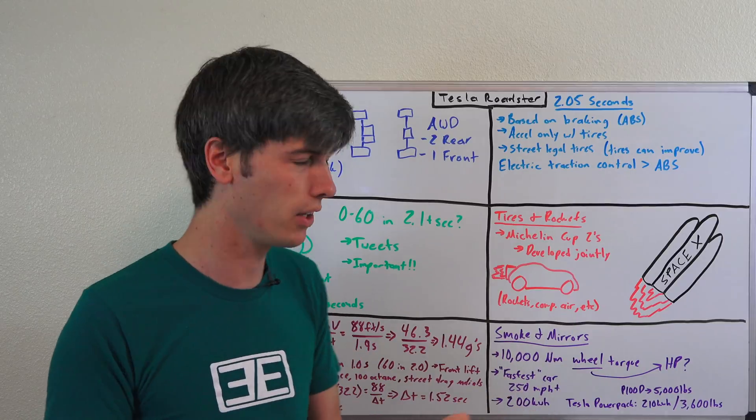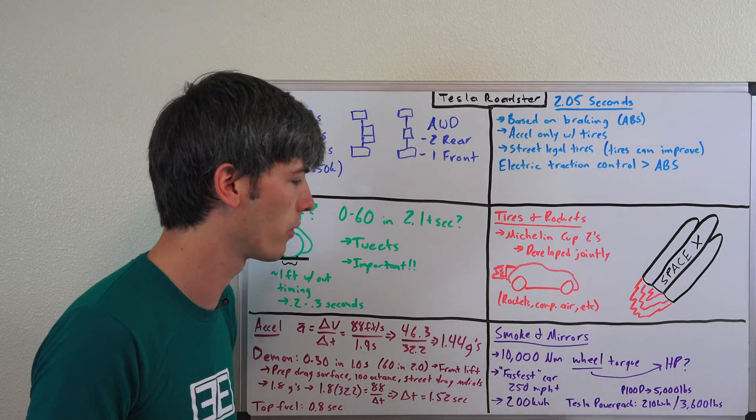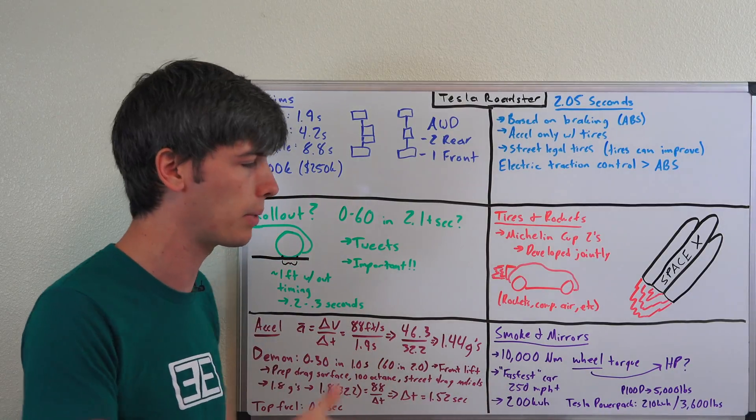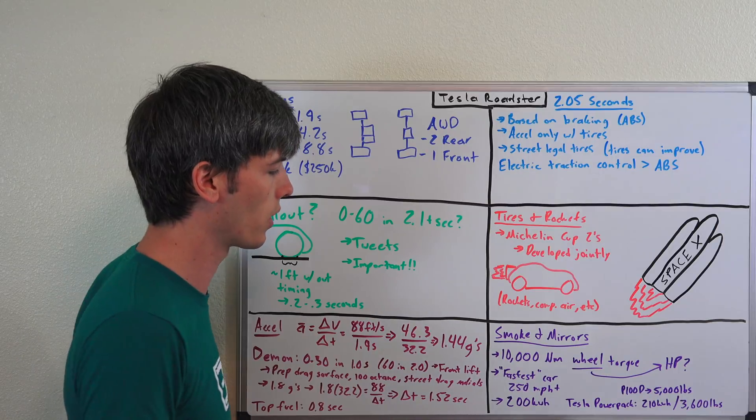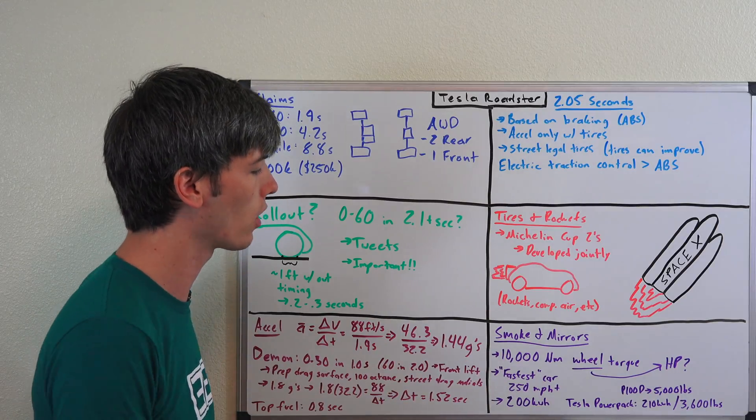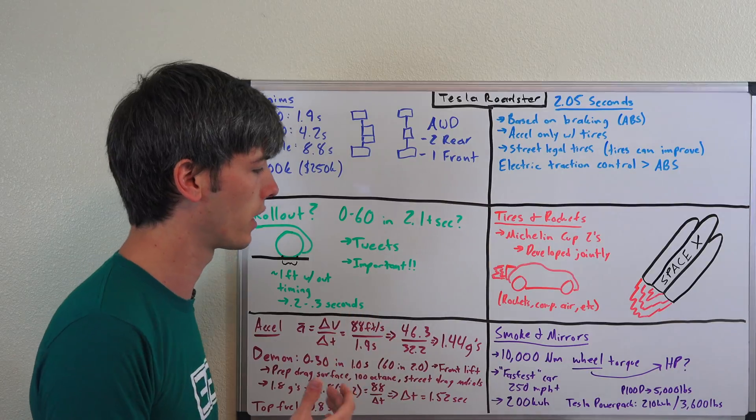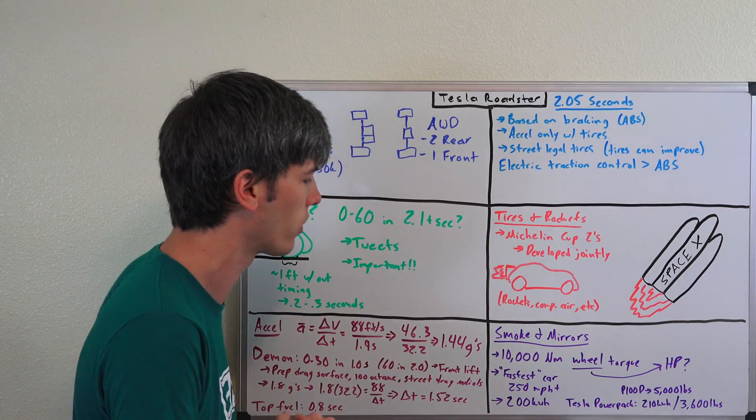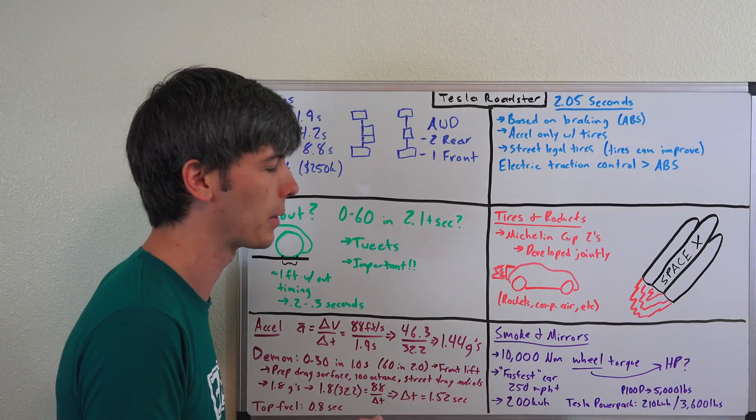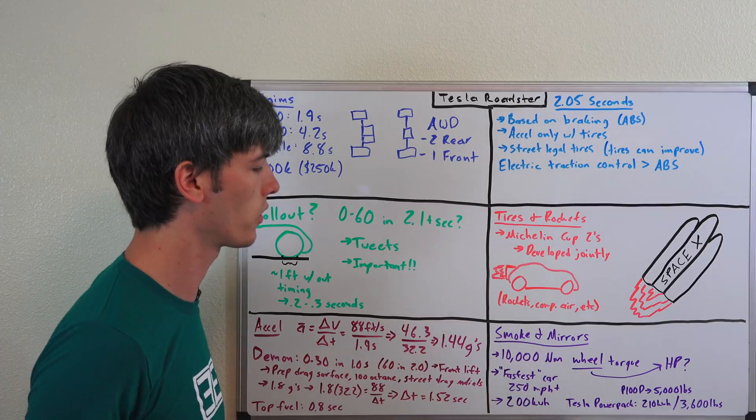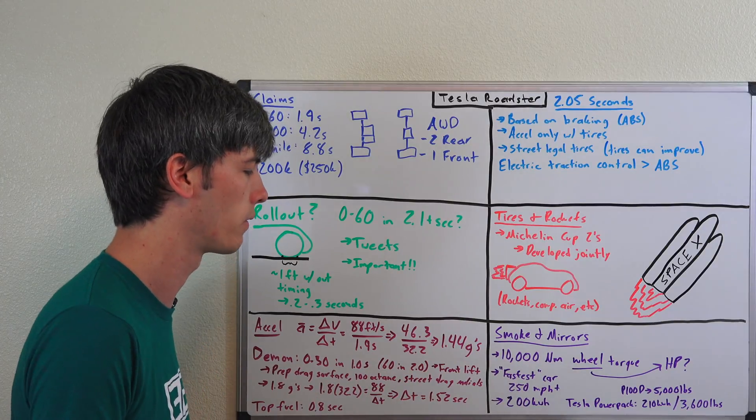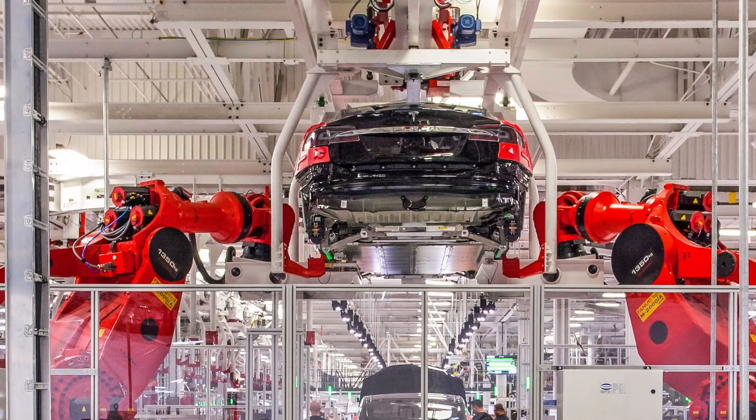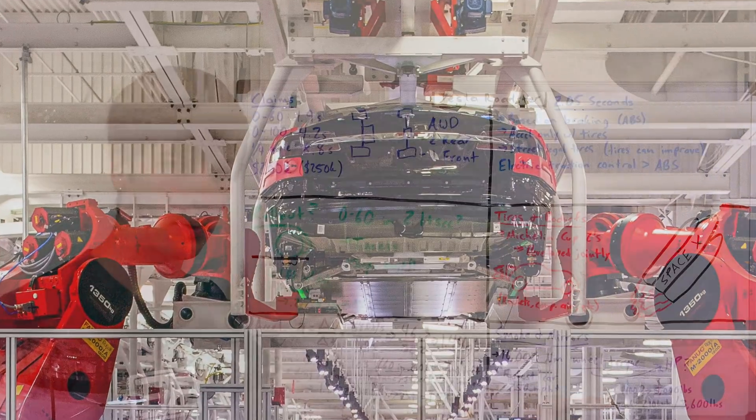They claim now 250 miles per hour plus. Perhaps they're targeting 300 miles per hour and they don't want to say it yet because there's kind of a competitive world going on for that right now. But if they truly are going to make the fastest car out there, then it's going to have to beat Koenigsegg's current world record which is like 277 or something along those lines. I would guess they're probably aiming for a very high number and they don't want to talk about it now. Hence they're just saying 250 miles per hour plus to not have this kind of battle going on about hitting the highest top speed.